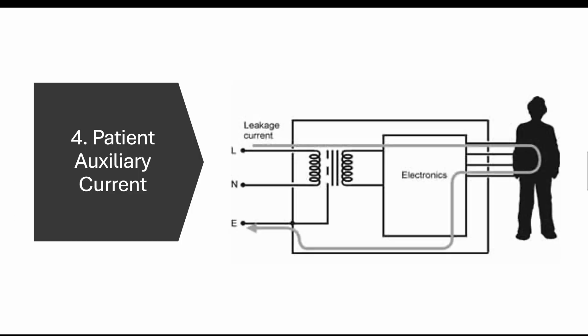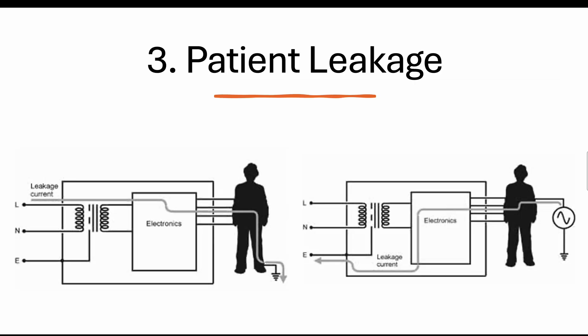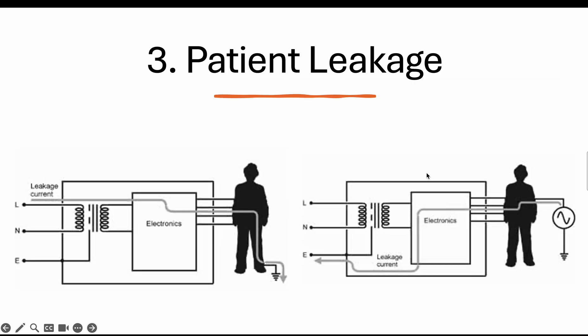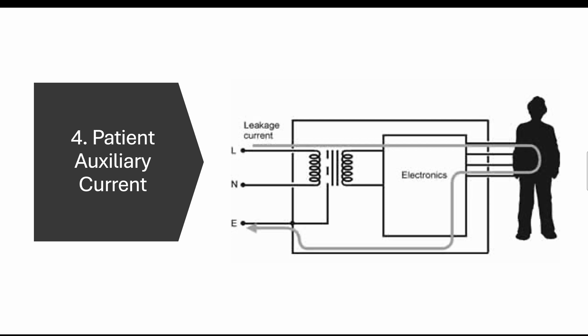Lastly, we've got the patient auxiliary current. This refers to any additional current applied to a patient in a medical setting that goes back to the equipment. The cause of this leakage current is normally a deliberate application by medical equipment for therapeutic or diagnostic purposes. It normally flows between the applied parts, as you can see from the diagram, and through the patient. Unlike the previous patient leakage current when it just goes through the patient and goes straight to ground, that's the difference between these two types of leakage current.